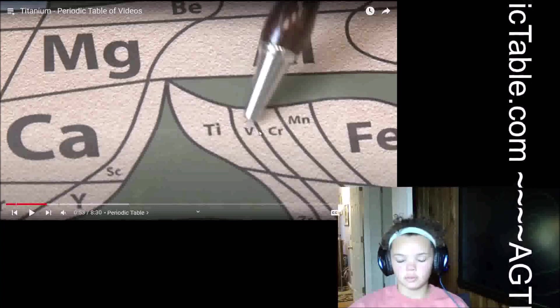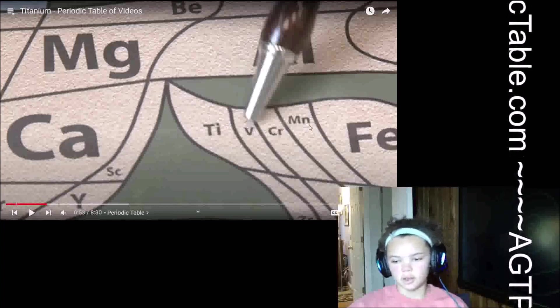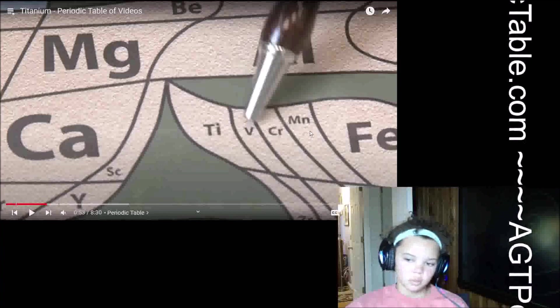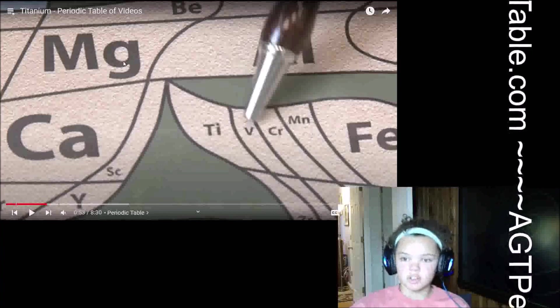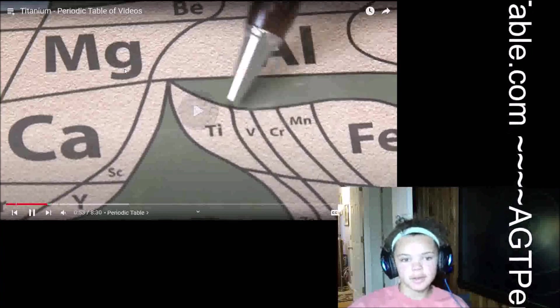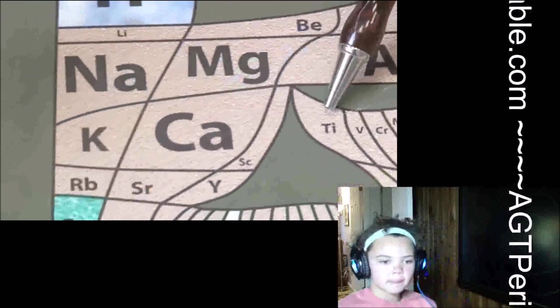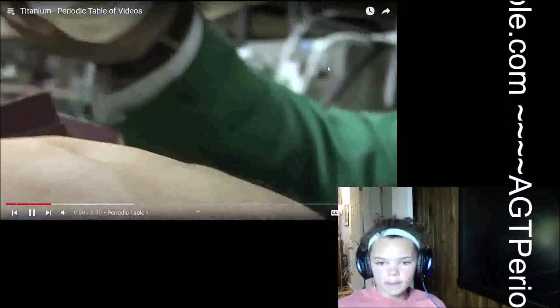A lot of the ones down in this relative area are pretty small: scandium, titanium, vanadium, chromium, and manganese. Iron's large, though — quite a reasonable amount, nearly as much as potassium. So it's a very common element.